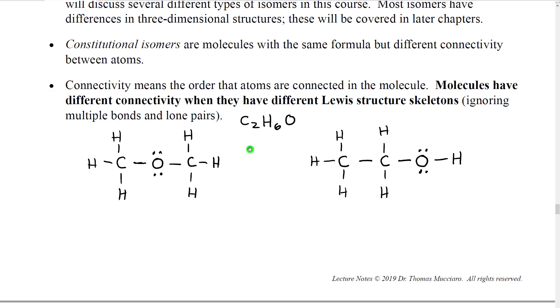We can read a Lewis structure in order to determine the connectivity. Let me show you how this works. We would say here's a carbon with three hydrogens attached, connected directly to an oxygen, which is connected to a carbon with three hydrogens attached. If we compare that structure to this one, here's a carbon with three hydrogens attached, connected to a carbon with two hydrogens attached, connected to an oxygen, connected to a hydrogen. So, you see how those verbal descriptions are different?